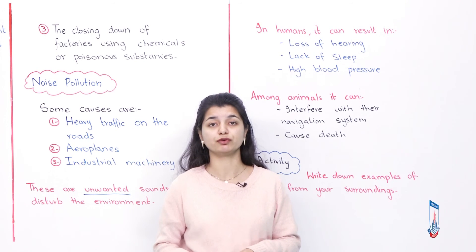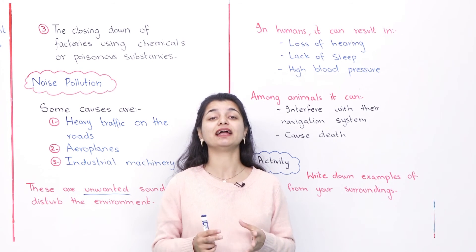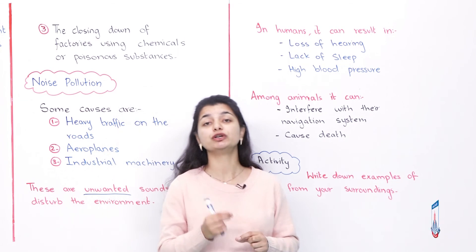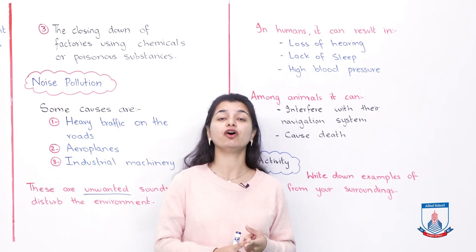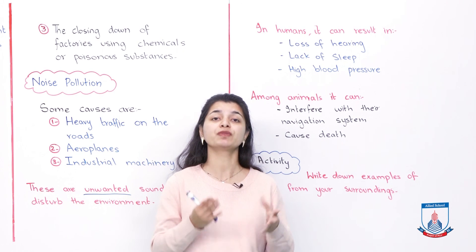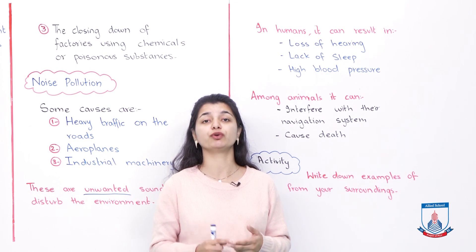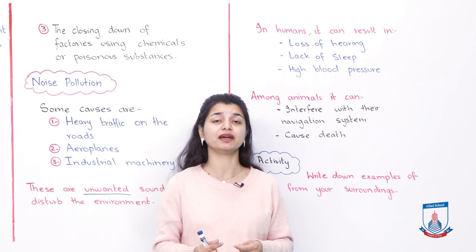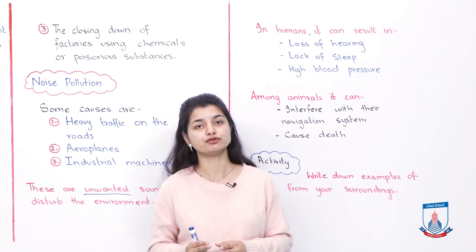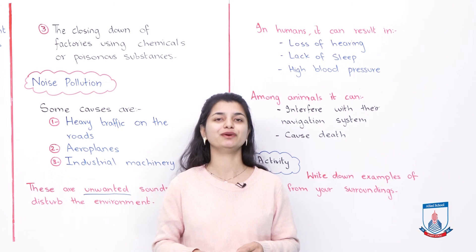These are severe consequences of noise pollution for both humans and animals. Today we have discussed two types of pollution: land pollution and noise pollution. For your activity, you have been asked to write down some examples of both land pollution and noise pollution from your own surroundings. I will see you again soon. Allah Hafiz.